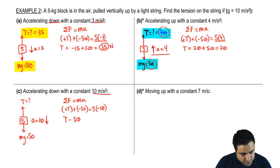Look what I get. T minus 50 equals negative 50. So t equals negative 50. This goes over to the other side. It becomes positive 50. And I get a tension is 0.